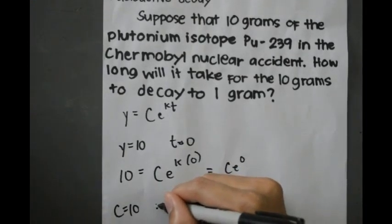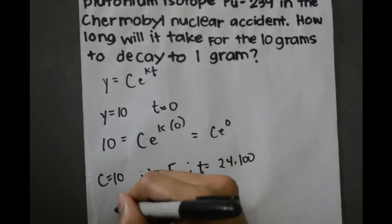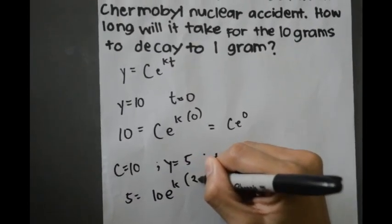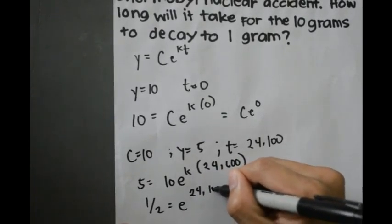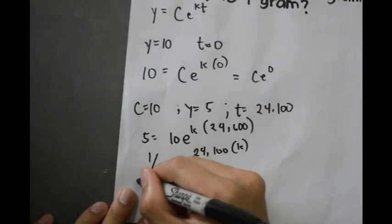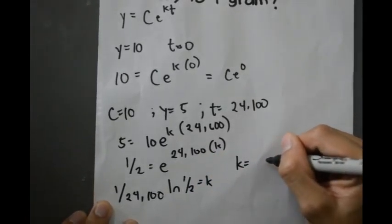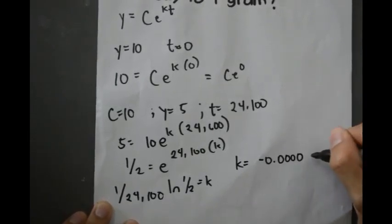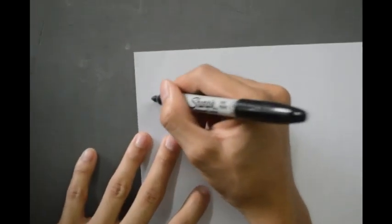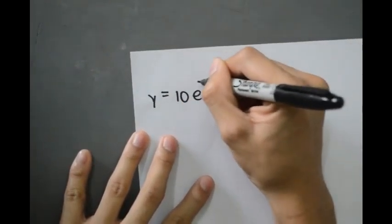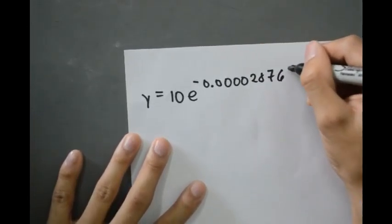Using the fact that y equals 5 when t equals 24,100, we write 5 equals 10 times e raised to k times 24,100. So one half equals e raised to 24,100k. Taking ln of one half over 24,100 gives k. Thus k is equivalent to negative 0.0000287. The half-life model is y equals 10 times e raised to negative 0.0000287 times t.